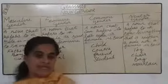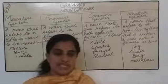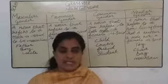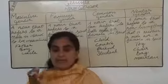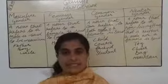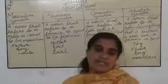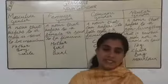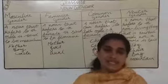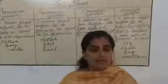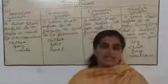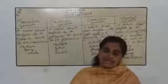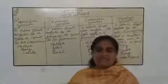Now let's revise today's topic: noun gender — four categories: masculine gender, feminine gender, common gender, and neuter gender. Now I wind up my class. See you next class. Thank you.